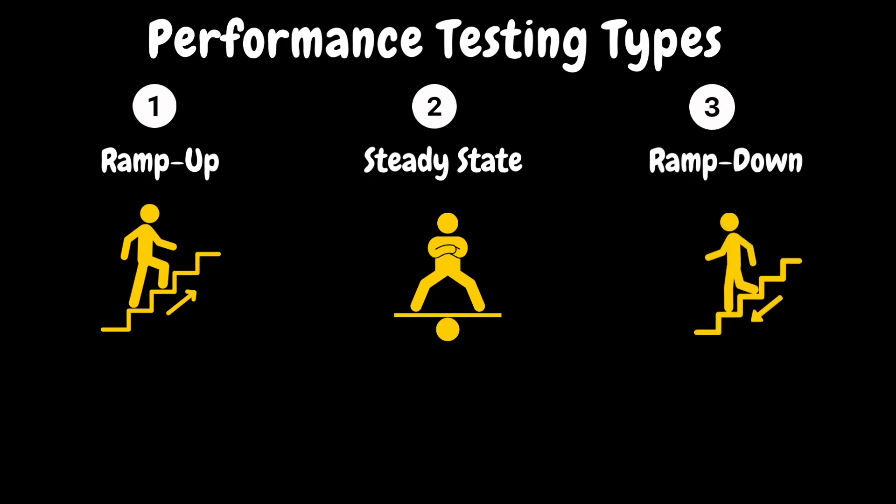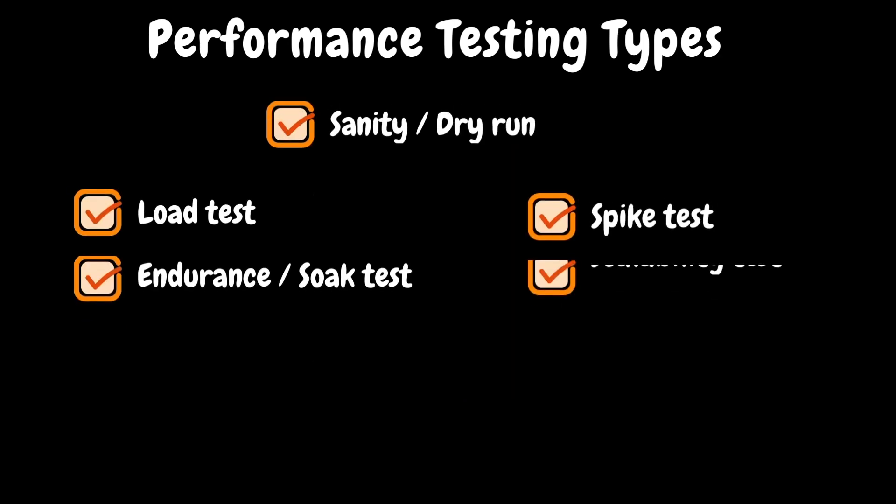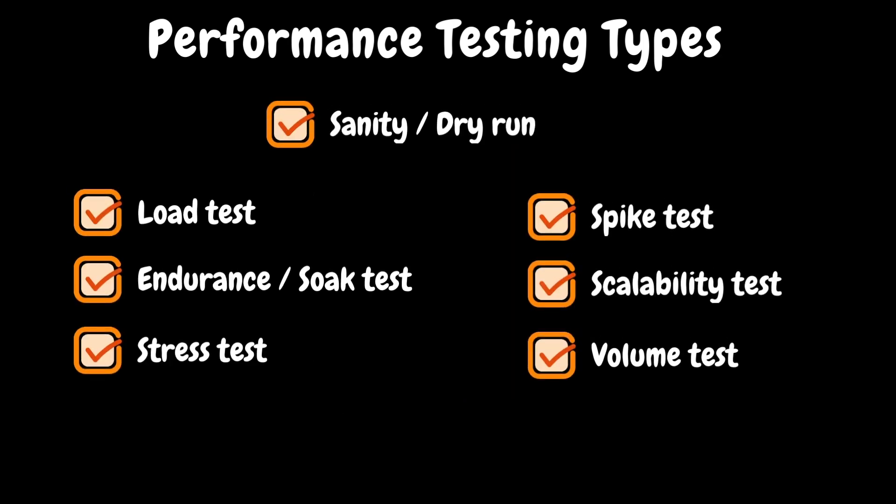The final phase is ramp down. It is a gradual decrease in the number of virtual users over a specified period following the steady state phase. The main purpose of ramp down is to simulate a realistic scenario where the user load decreases gradually, eventually reaching zero. It is typically employed at the end of the performance test to gracefully conclude the test and allows the system to return to normal operation levels without any sudden disruptions. Now let's look at different types of performance tests.